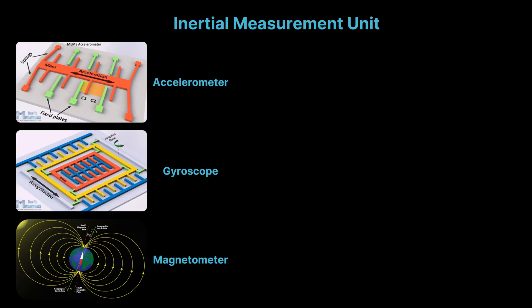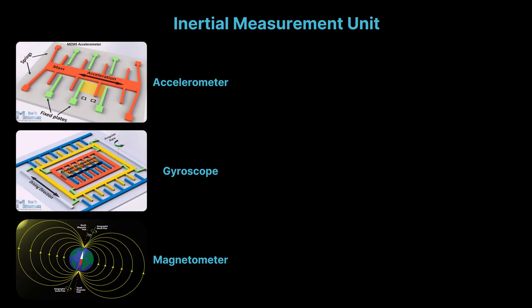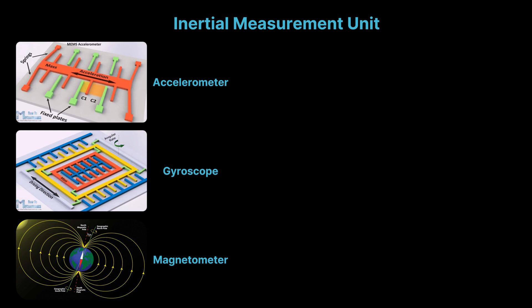The MEMS IMU, or Micro Electromechanical Systems Inertial Measurement Unit, is a compact, low-cost variant commonly used in drones. It combines micro-scale accelerometers and gyroscopes, sometimes magnetometers, fabricated through micromachining techniques. MEMS IMUs are lightweight and energy efficient, making them ideal for embedded systems, though they generally have higher noise and drift compared to high-performance IMUs.